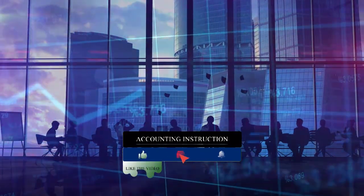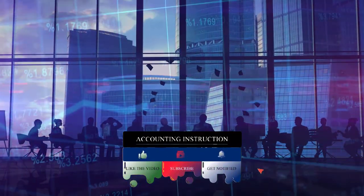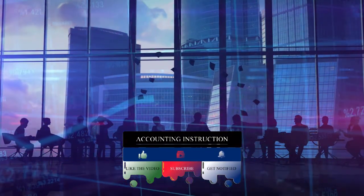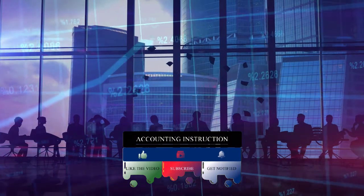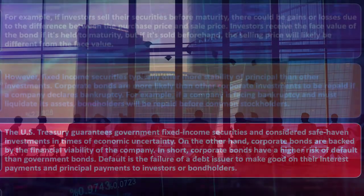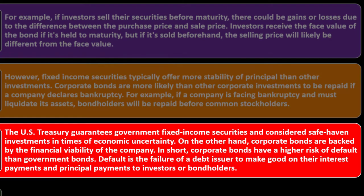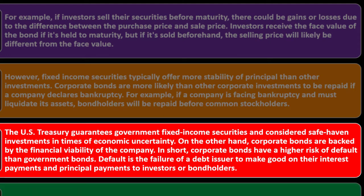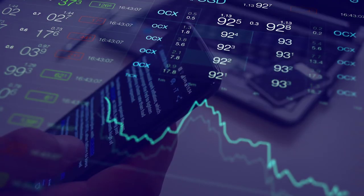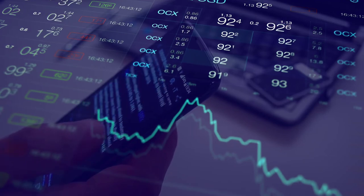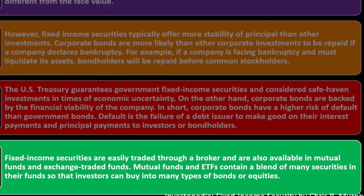Corporate bonds are backed by the financial viability of the company — corporate bonds have a higher risk of default than government bonds. Government bonds, backed by the power to tax and print money, are thought to be least risky. Large corporations are considered the next most stable. The more stable the issuer, the lower the required return — the more risk, the higher the market demands in return. Default is the failure of the debt issuer to make good on their interest and principal payments to bondholders.